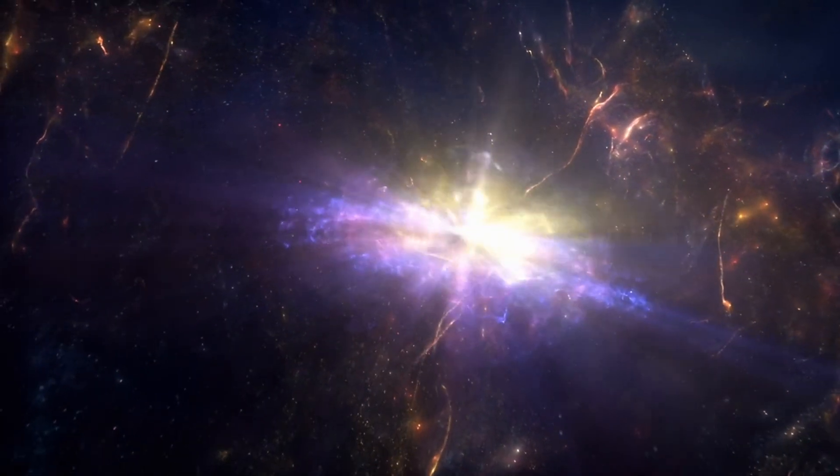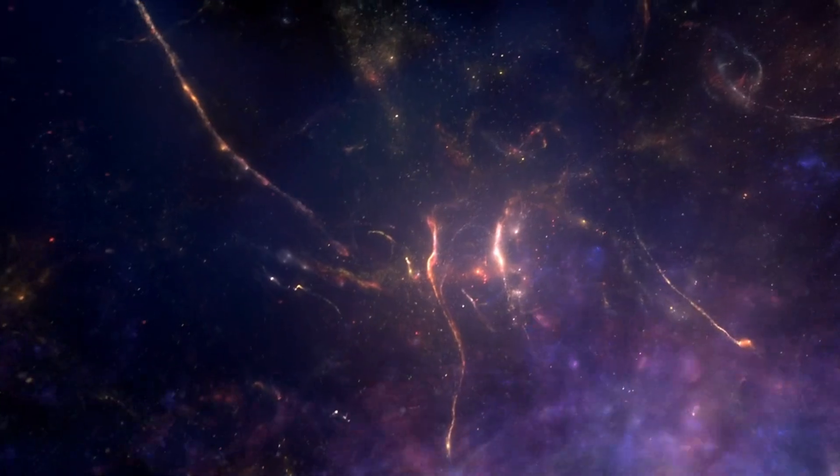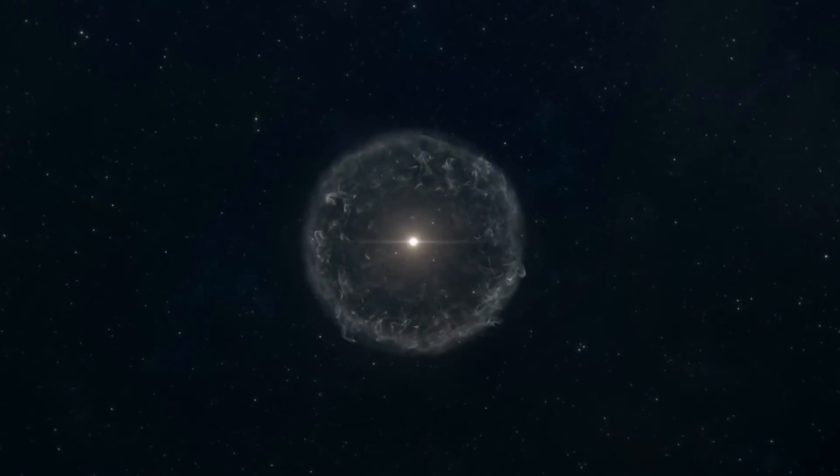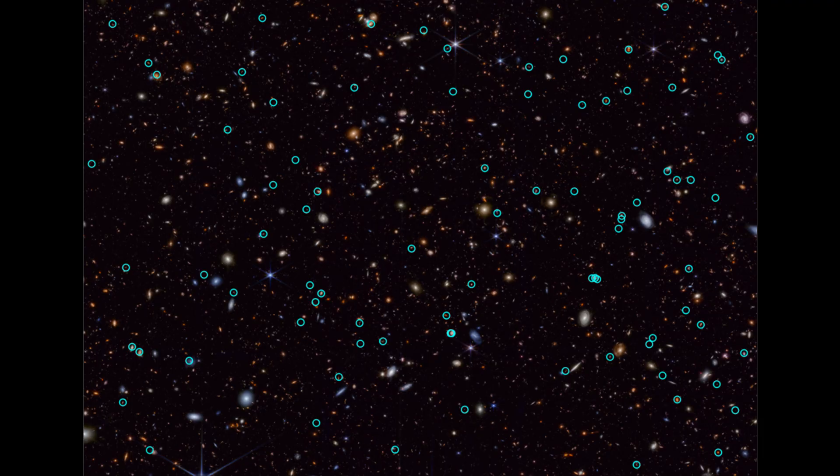According to what we know, no light should have been able to shine through the dense hydrogen clouds of the Dark Ages, making it impossible to see anything from that era. So, what could these strange lights be, and where are they coming from?